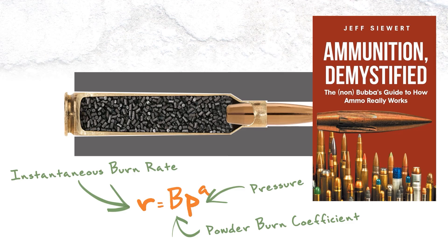If you haven't read Ammunition Demystified, it's a worthwhile read. It is exceedingly technical, but there are a lot of nuggets in there that are really important for understanding what's happening. This burn rate equation was one of the most important things I've come across. I intuitively knew it, but when somebody tells you the science and mathematics behind it, it makes a lot more sense. It was one of those aha moments. Worth getting, worth reading, worth having as a reference on the shelf.